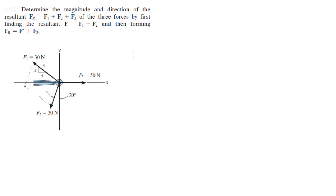Which to me is a waste of time—you should just add all three of them at the same time by dividing into X and Y components. But okay, we'll do it how they want it. So F prime is equal to F1 plus F2.